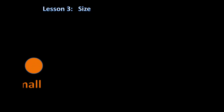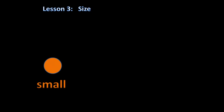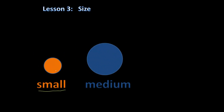Today we're going to learn about different sizes. Here we have the first size. This object is a circle that we learned from last video, and this object is small. So the size of this object is small. The next object looks like this and it's also a circle, but we're going to say the size of this object is medium.